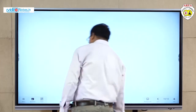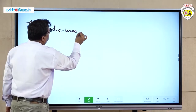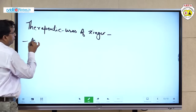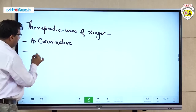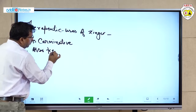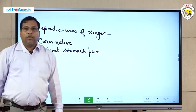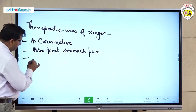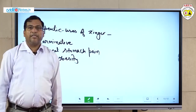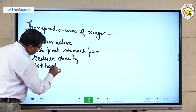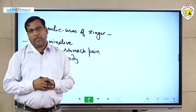Therapeutic usage of ginger: it acts as a carminative and is used to treat stomachic pain. It is also used to reduce obesity and has antimicrobial and antibacterial properties. These are the basic uses of ginger (adhrak).